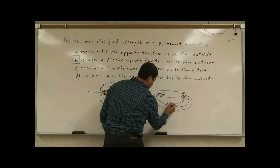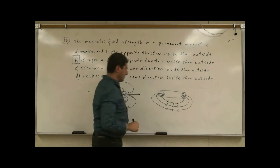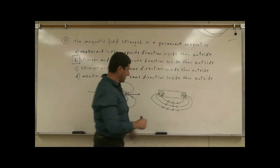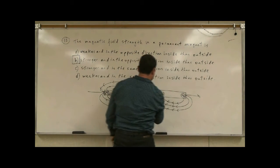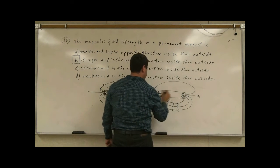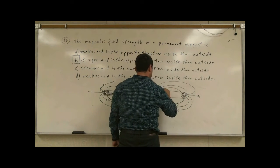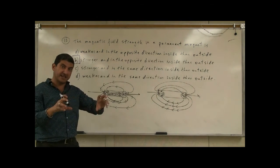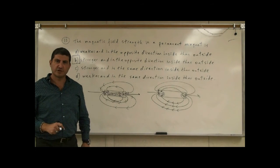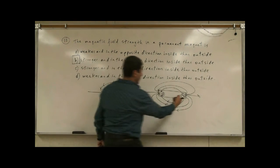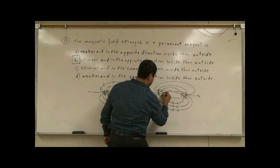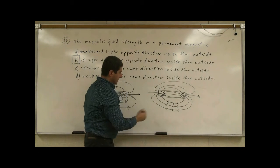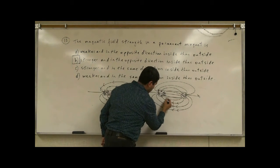Outside the chamber, the electric field lines would go like that — looping around, similar to the magnetic field lines. Then inside the chamber, the electric field lines come out of the positive charge and go towards the negative charge. There's also one that comes out and then goes back in like that.